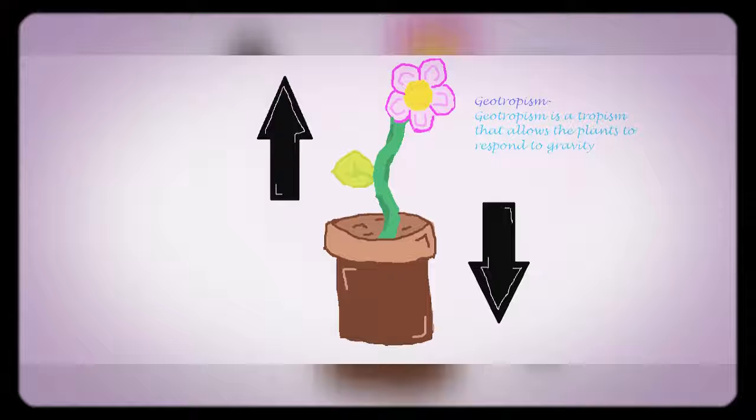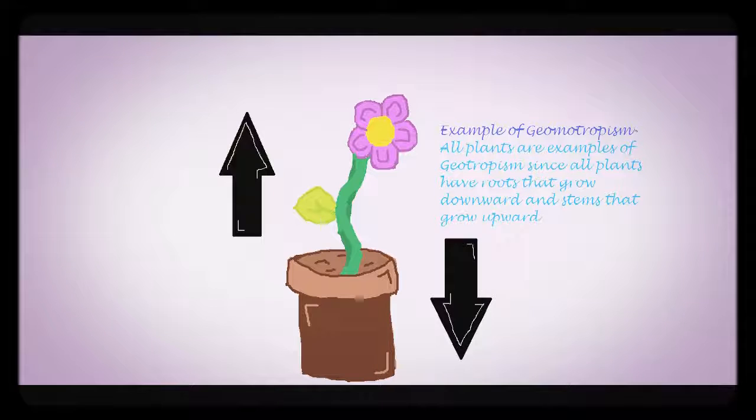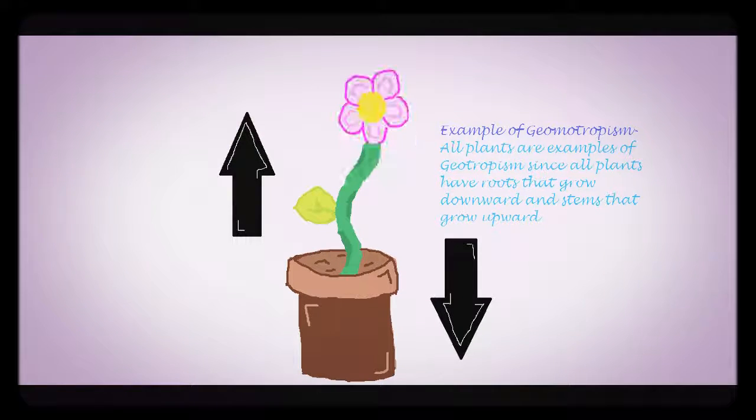Geotropism is a tropism that allows plants to respond to gravity. All plants are an example of geotropism since all plants' roots grow downwards and stems grow upwards.